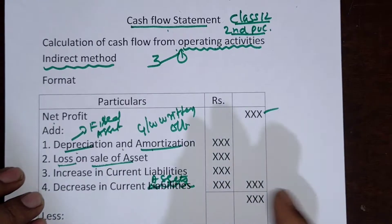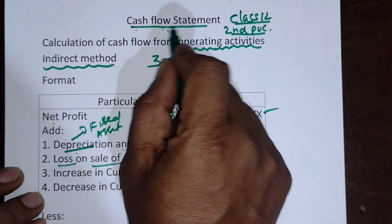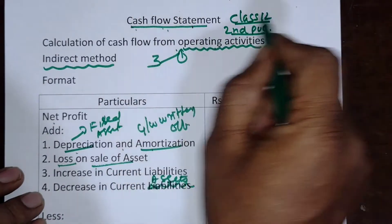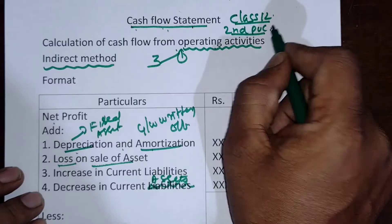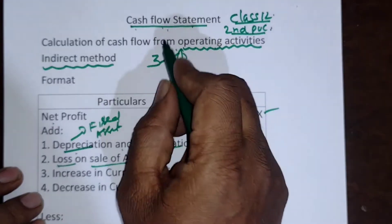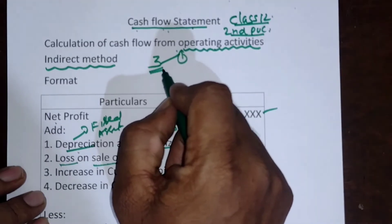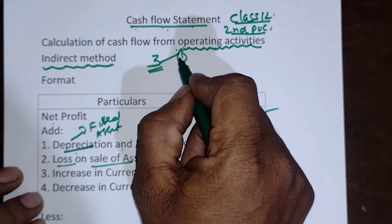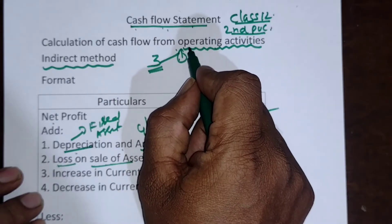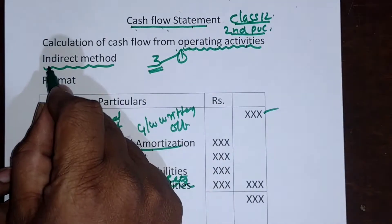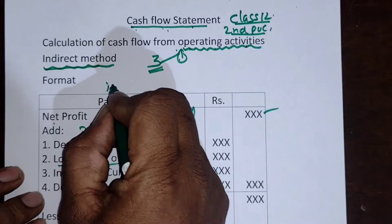Welcome. I am covering the topic 'Cash Flow Statement' for Class 12. Under this cash flow statement, three different topics are there. Out of that, the very first topic I am covering now is operating activities under the indirect method.